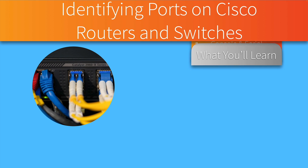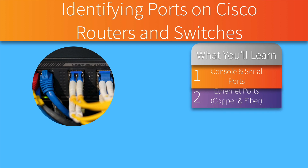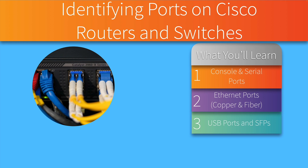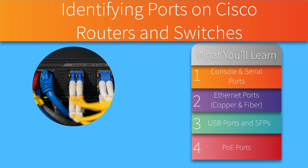For example, we're going to begin with a look at a console port, which looks a lot like an Ethernet port but uses a different cable and has a different purpose. We'll talk about serial ports and of course the most popular type — Ethernet ports, both copper and fiber. We might also be surprised to see that some routers or switches have USB ports, and we'll cover SFPs — small form factor pluggable transceivers — and wrap things up with a look at different Power over Ethernet standards.